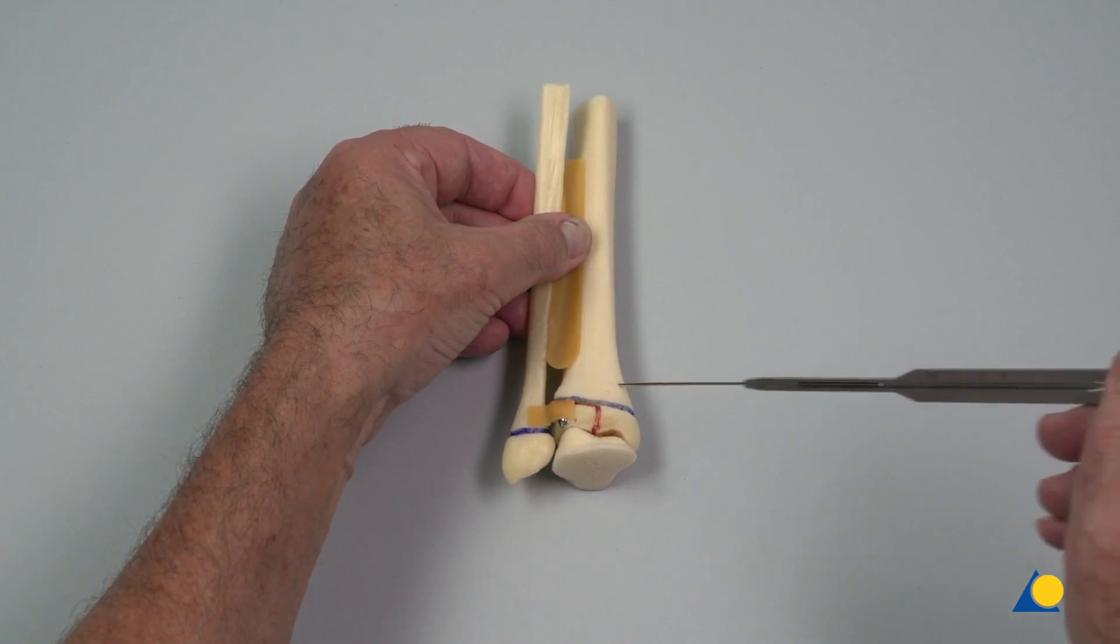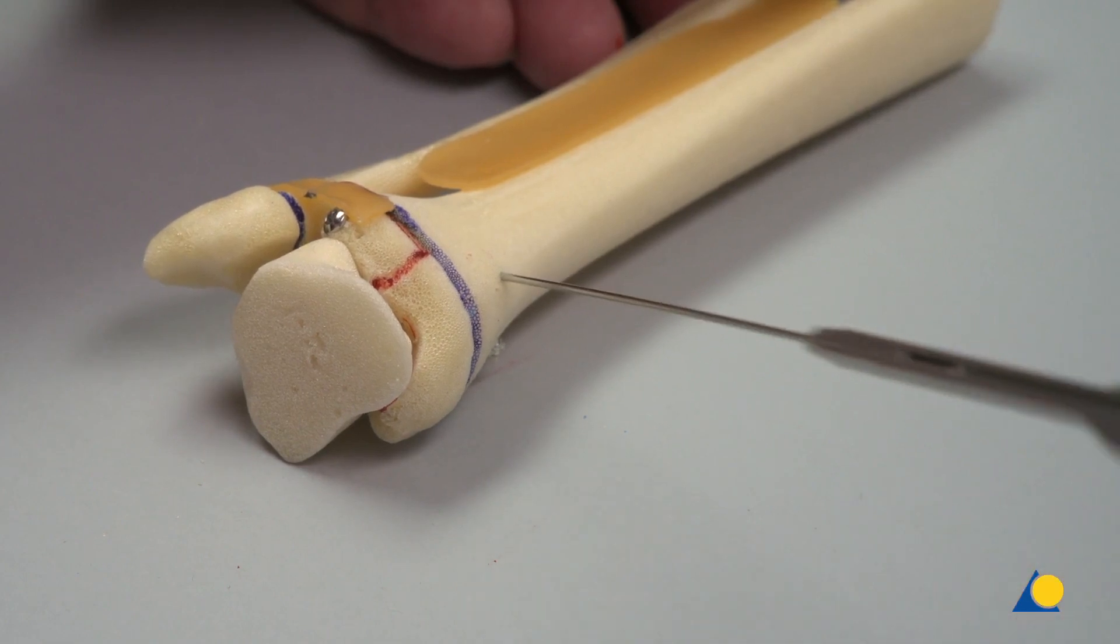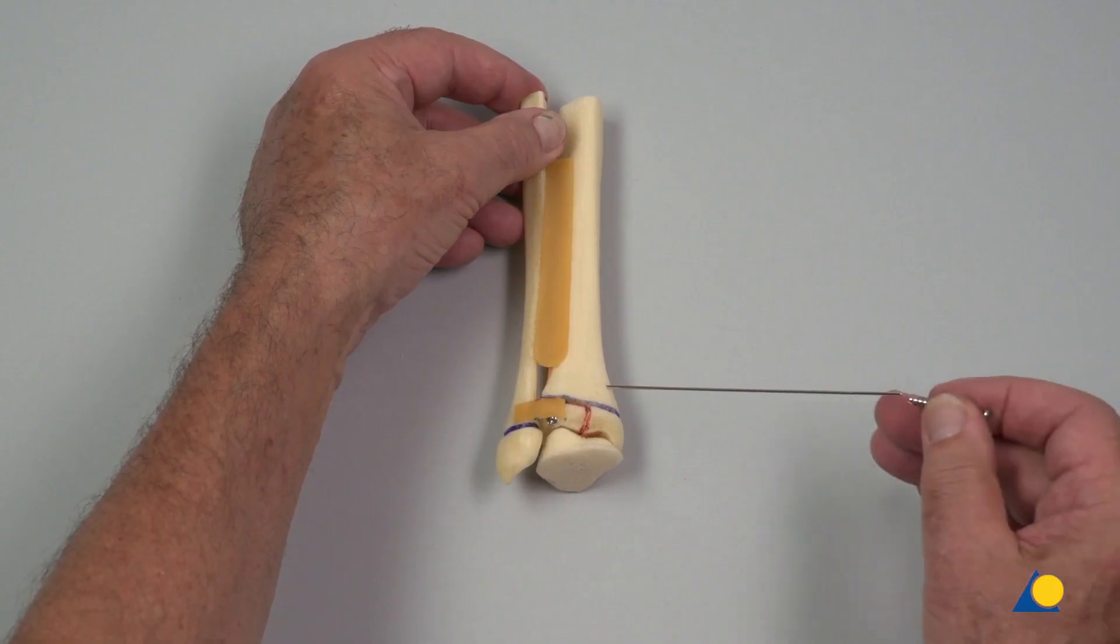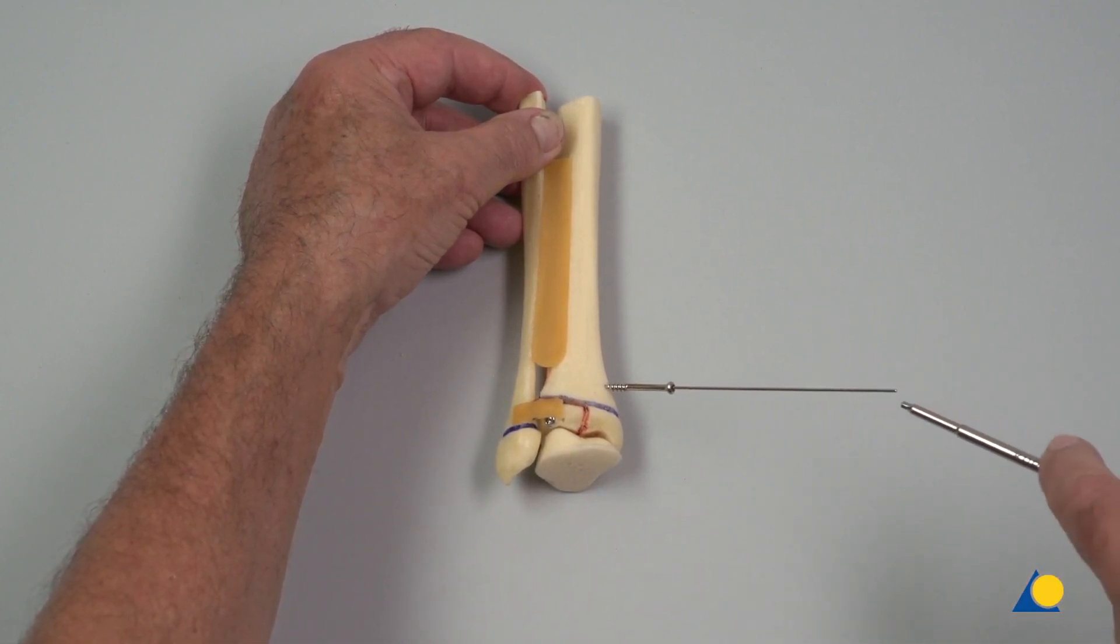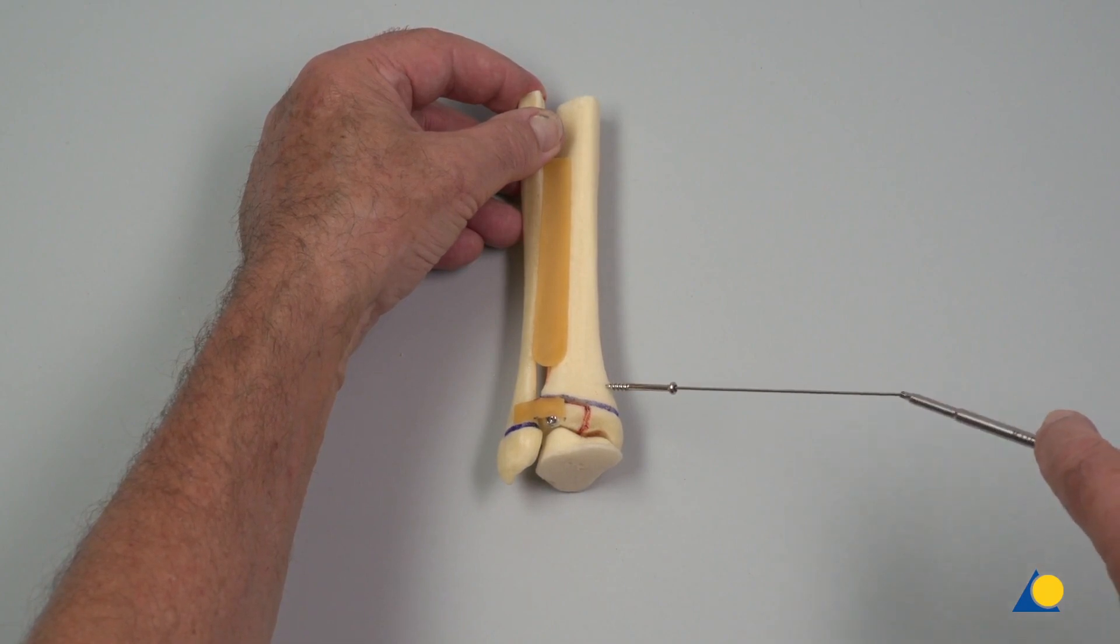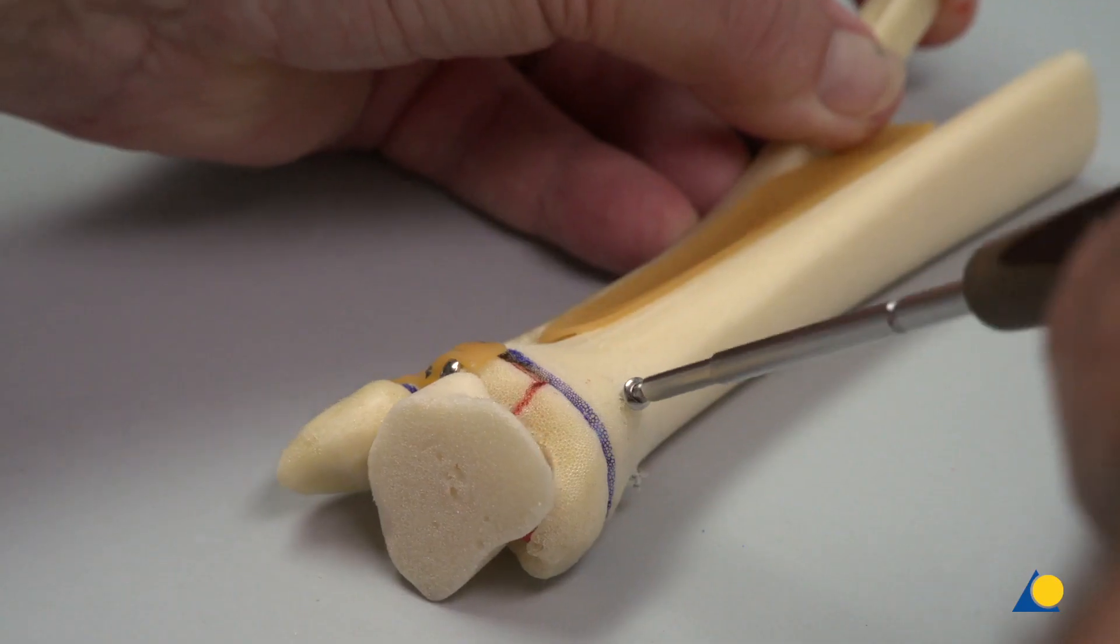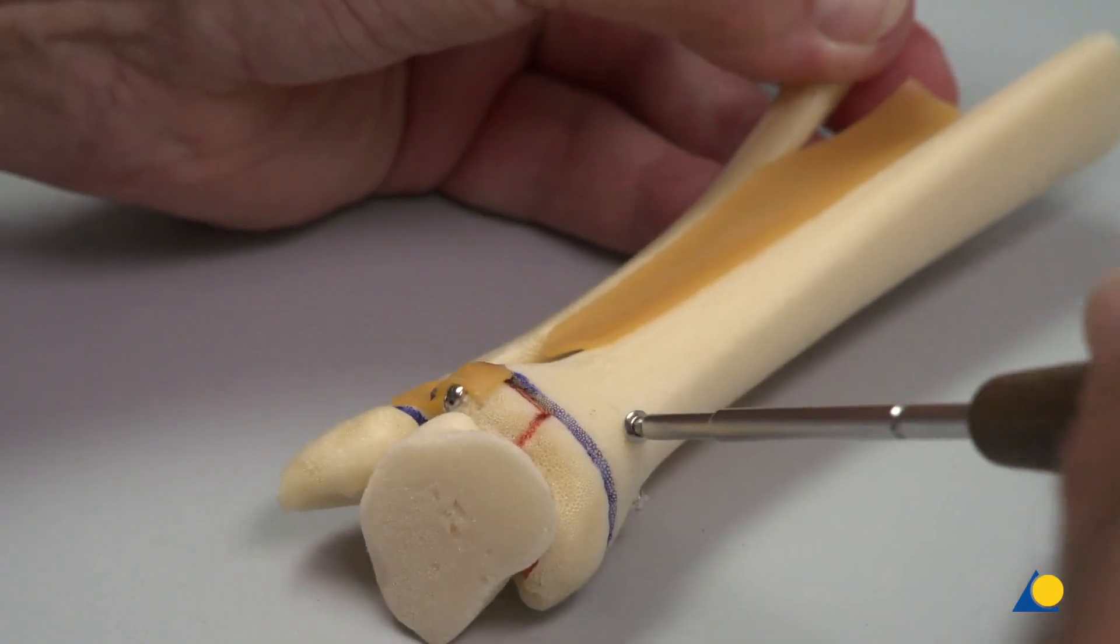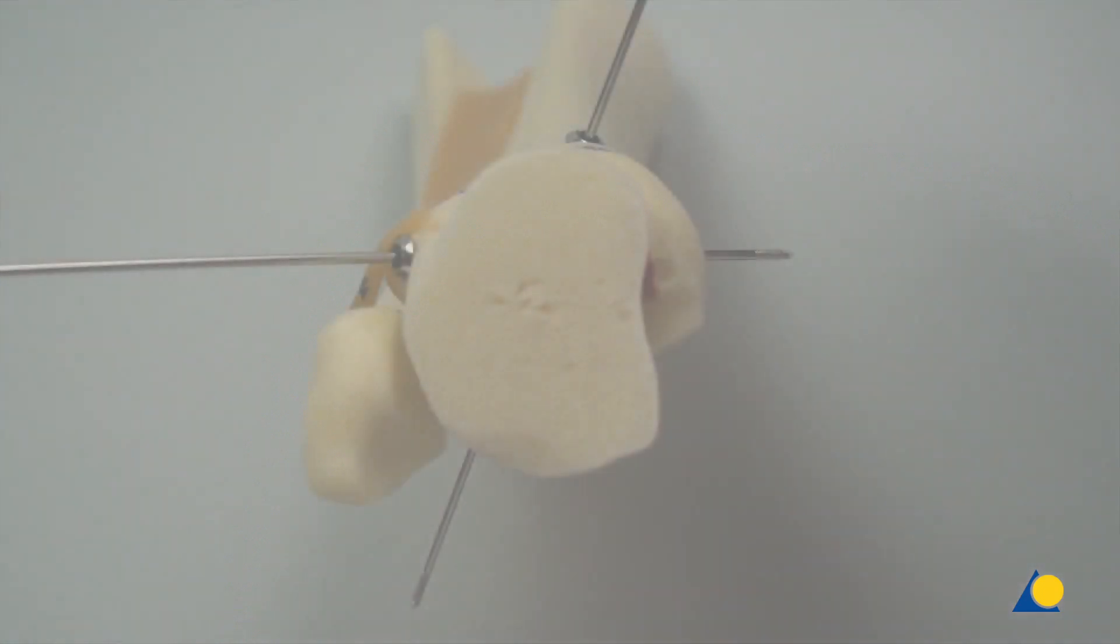The screw length is measured using the depth gauge. The cannulated screw is slid over the guide wire and inserted using the screwdriver. In the axial view, the nearly perpendicular position of the two screws is visible. The posterior metaphysial fracture is reduced and fixed.